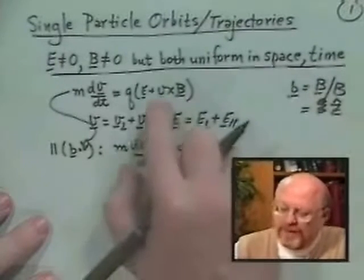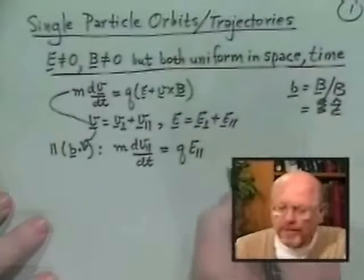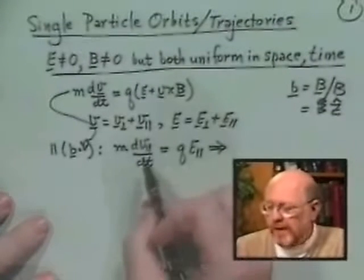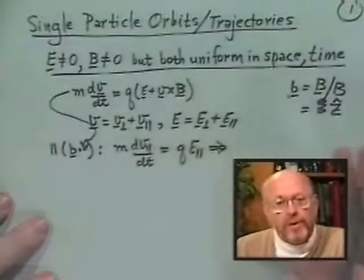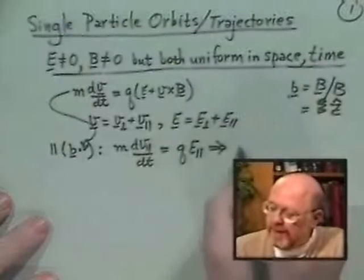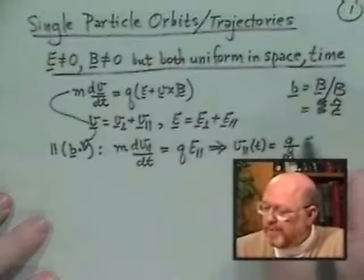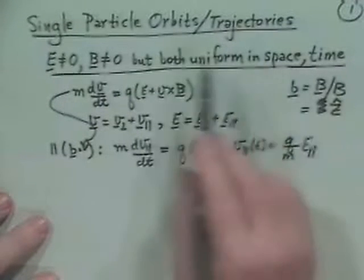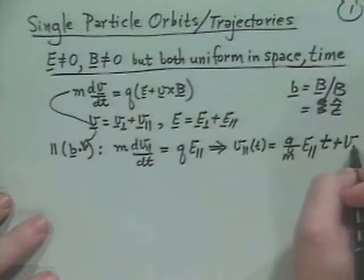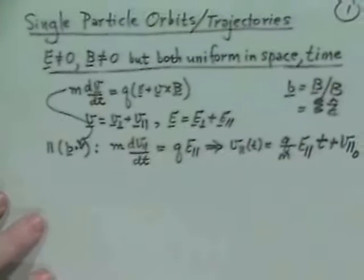B dot V cross B is zero, so we don't get any magnetic field effect along the field line. Dividing by M gives dV_parallel/dt equals Q/M times E_parallel. Integrating: V_parallel(t) equals Q/M times E_parallel — which is constant — times time plus V_parallel_naught, the initial velocity.